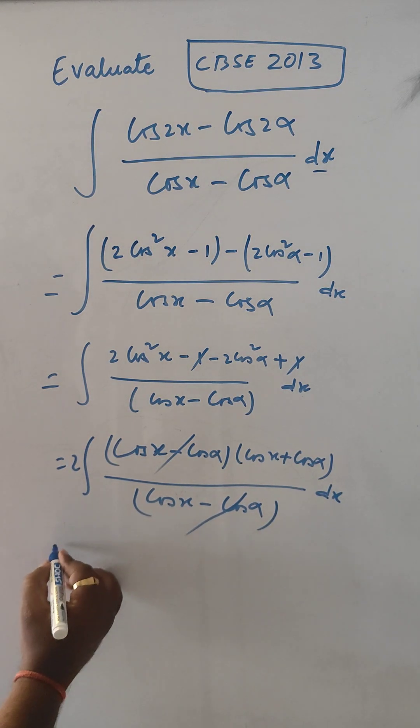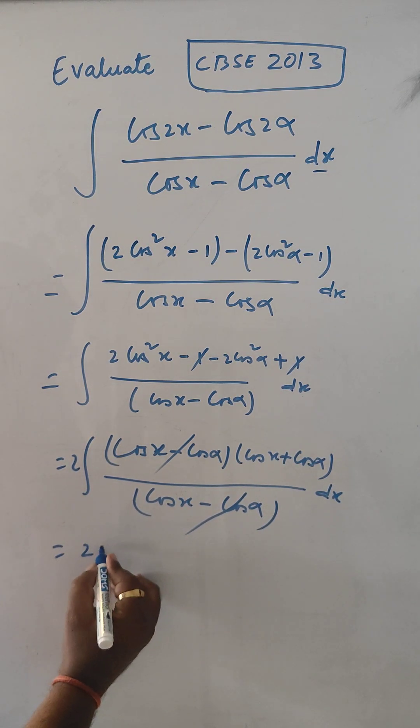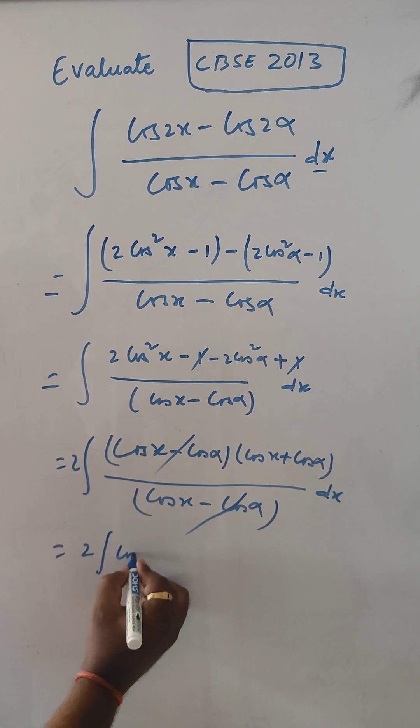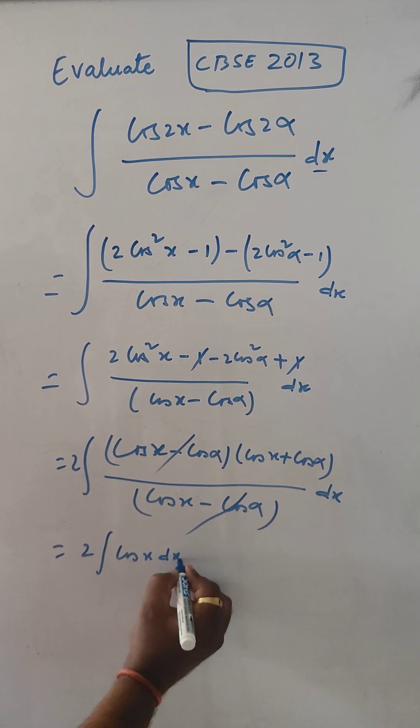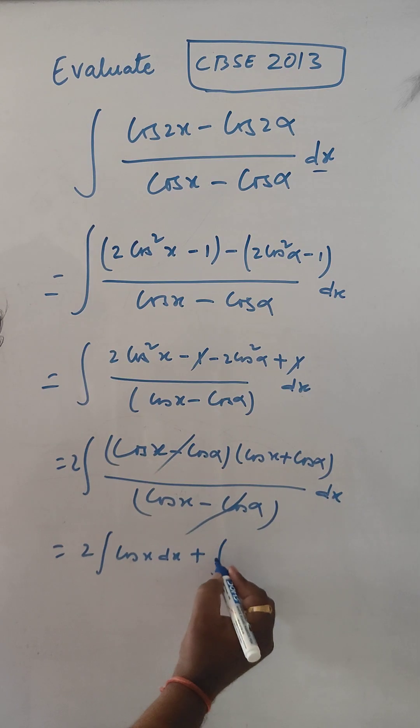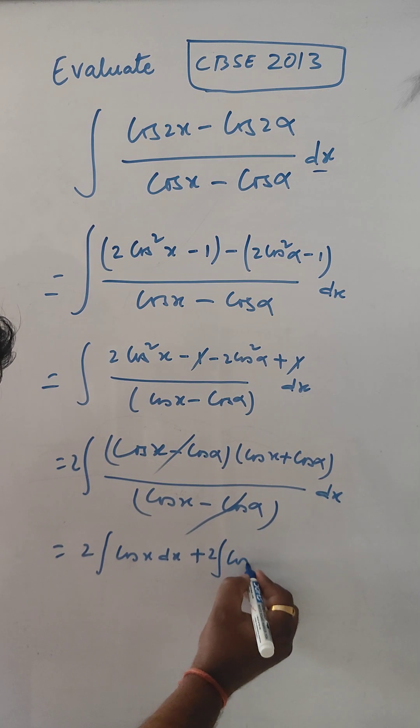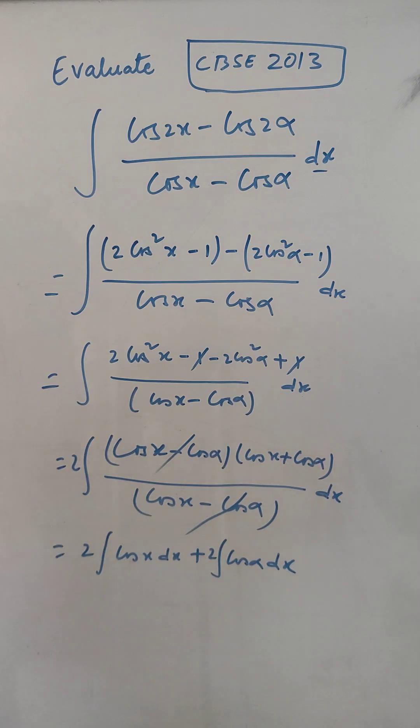Now we can write this as: integral of 2 cos x dx plus 2 cos α dx.